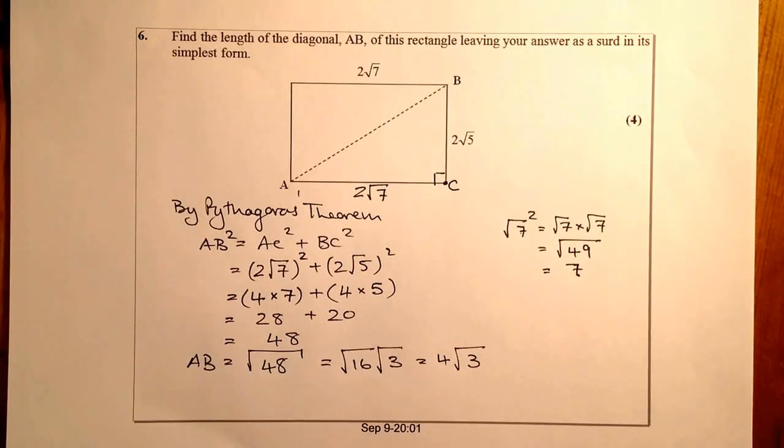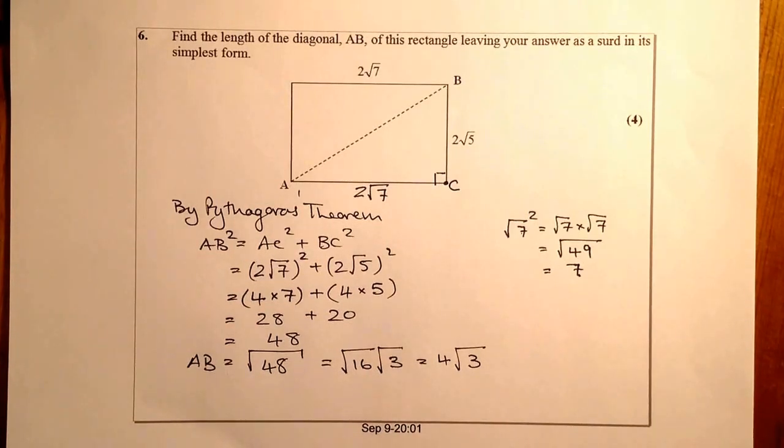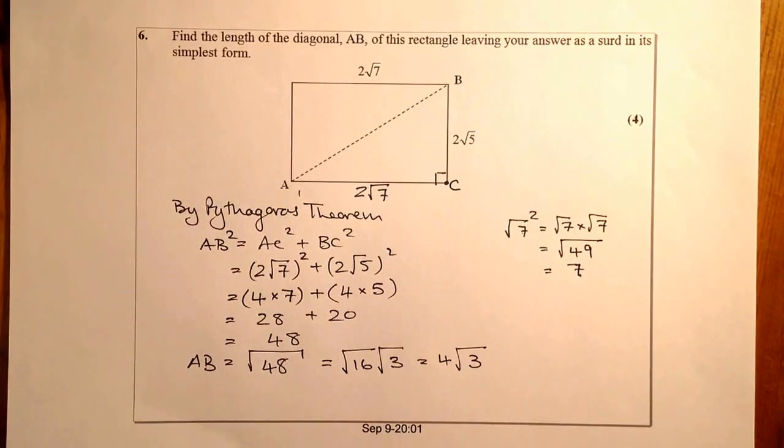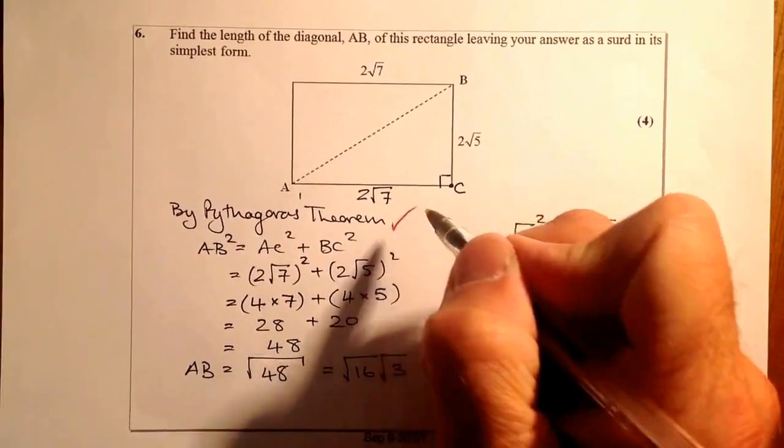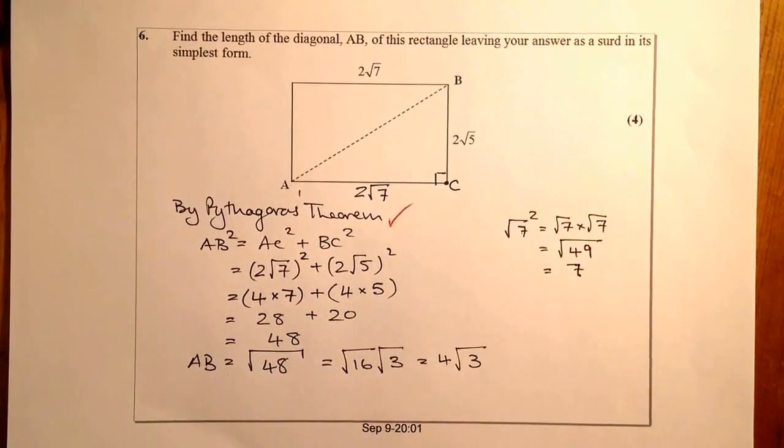Okay, so this one here is worth four marks. And again, this could be a kind of standard exam question on surds. Make sure there's surds in Pythagoras theorem. So let's have a look at where we're getting our marks. So one mark for knowing to use Pythagoras theorem in this one.